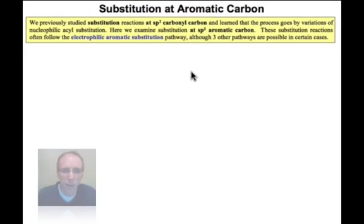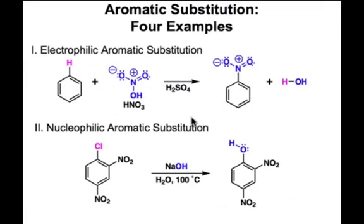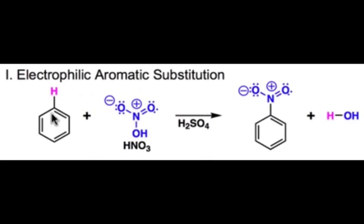Let's take a look first at the electrophilic aromatic substitution pathway. Here's an example where we just have benzene. The hydrogen atom in this case is replaced by the nitro group, which comes from nitric acid.